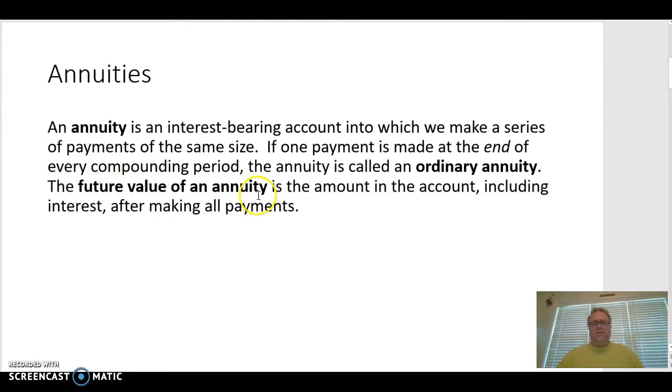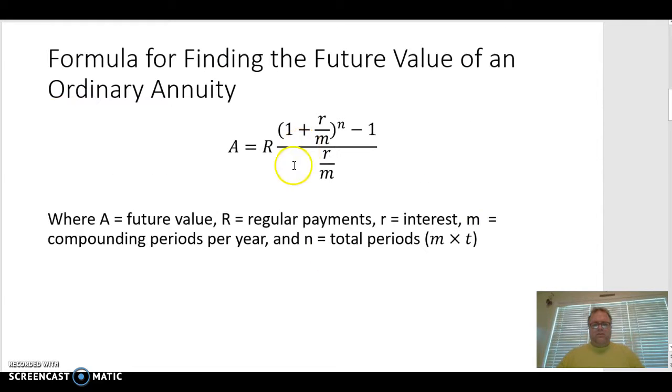So the future value of an annuity is the amount in the account, including interest after making all payments. So let's go ahead and look at the formula here.